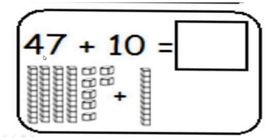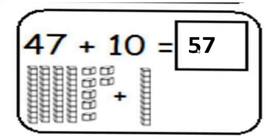Now look at this — 47 plus 10. These are the 47 blocks. What should we do? We should start counting after number 47: 48, 49, 50, 51, 52, 53, 54, 55, 56, and 57. 47 plus 10 — I should write 57.